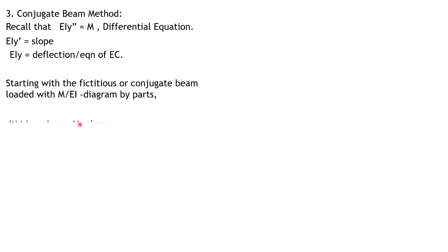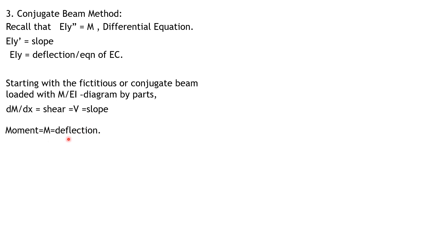Starting with the fictitious or conjugate beam loaded with M-over-EI diagrams, we have EI y-double-prime equals moment. From statics, the derivative of moment with respect to x is shear, and this shear in the conjugate beam corresponds to the slope of the real beam — which we will show through this equation.